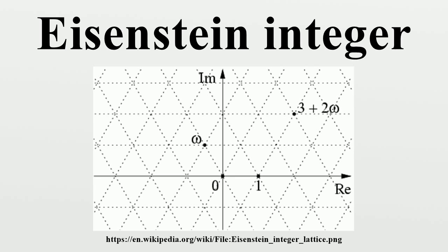Every Eisenstein integer a + b*omega whose norm a² - ab + b² is a rational prime is an Eisenstein prime. In fact, every Eisenstein prime is of this form or is a product of a unit and a rational prime congruent to 2 mod 3.